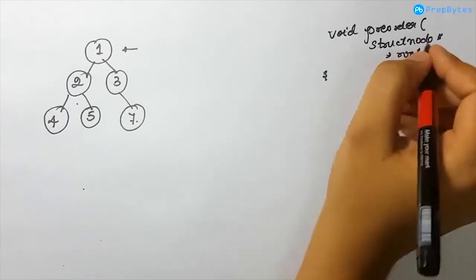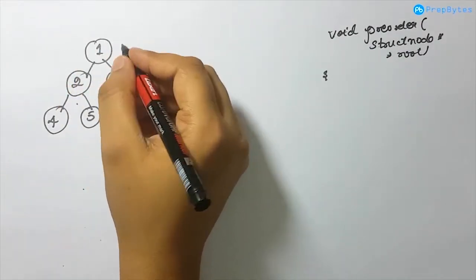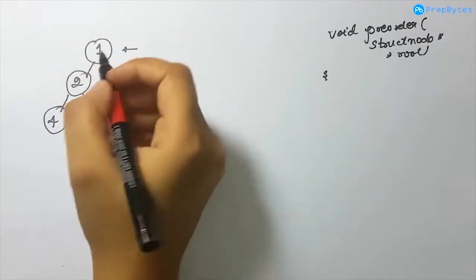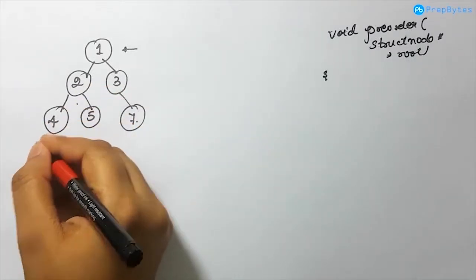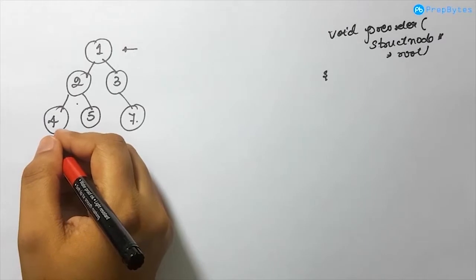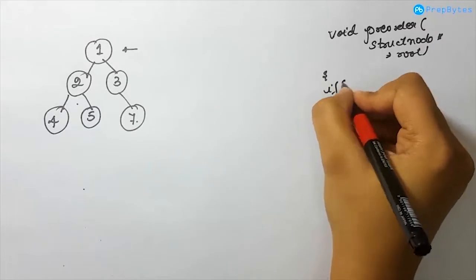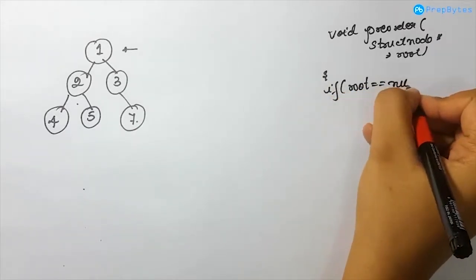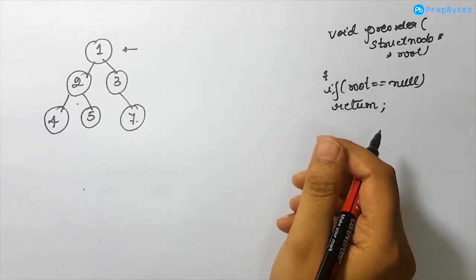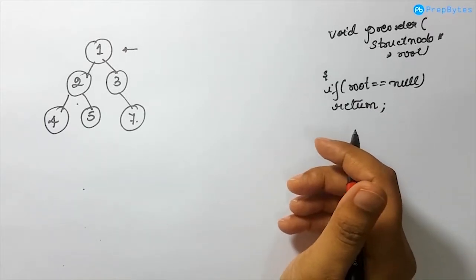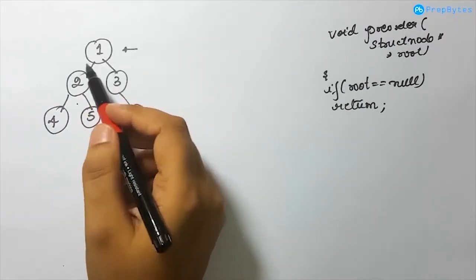The very first thing we receive as a parameter is the pointer for this particular node. What is the base condition? So let's say I'm traversing the tree — I traverse this node, I print this node, and then when I go to the left child of this particular node, I encounter null. So I won't be doing anything, I will just be returning. This will be my base condition: if root is equal to null, we should return. We don't want to do any processing on the root node. Now we know that in the case of pre-order, the very first thing we do is print the value of that particular node.